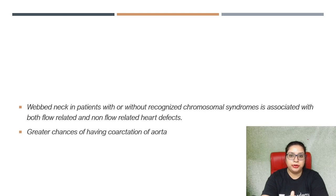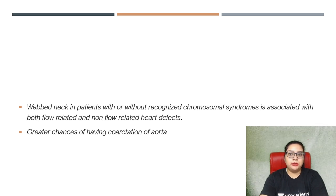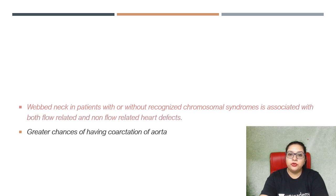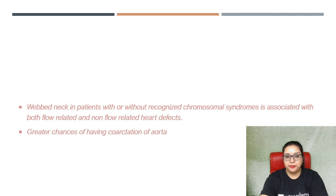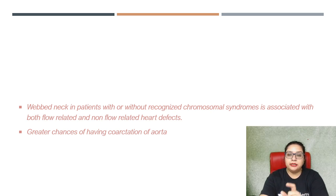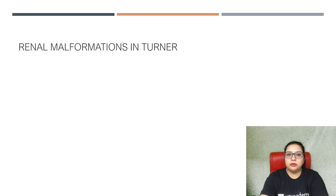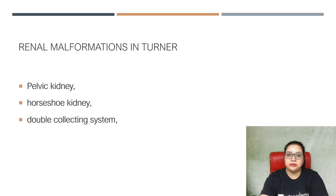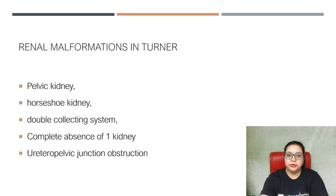An important statement that has been asked as an MCQ directly: webbed neck in patients with or without recognized chromosomal syndrome is associated with both flow-related and non-flow-related heart defects. Turner syndrome children have a greater chance of coarctation of aorta — note the difference: the greatest chance is coarctation, but the commonest cardiac anomaly is bicuspid aortic valve. Renal malformations include pelvic kidney, horseshoe kidney, double collecting systems, complete absence of one kidney, and ureteropelvic junction obstruction.